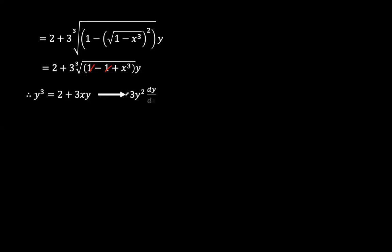Now, what that means is that we differentiate. 3y squared dy dx equals 2 is a constant, so that's zero, plus differentiate with respect to x we have 3y, plus with respect to y, so we have 3x dy dx.